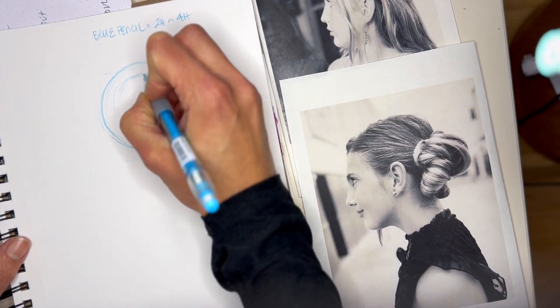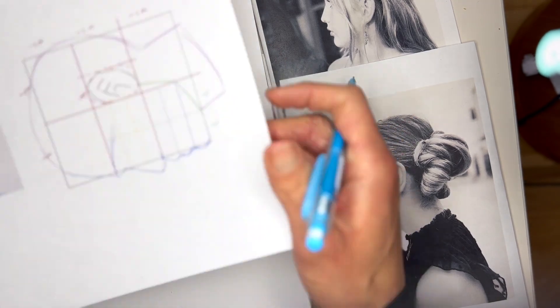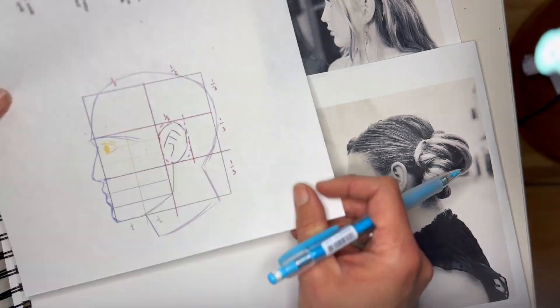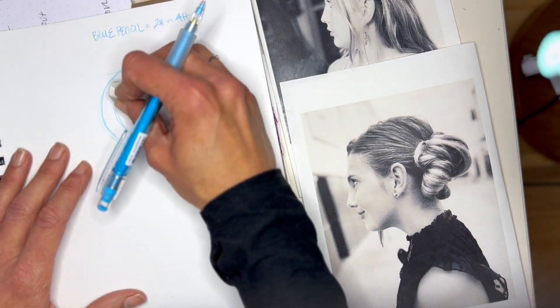That inside circle takes up about three quarters of the larger circle. These are more like guidelines anyways. It could be a little bit more than three quarters, maybe a little bit less.